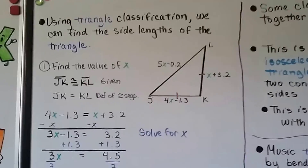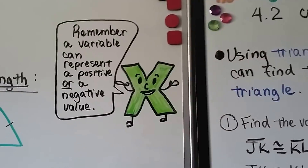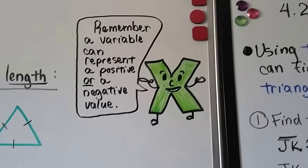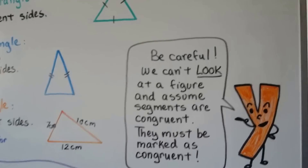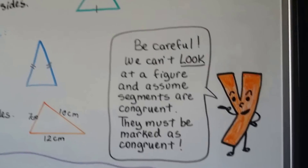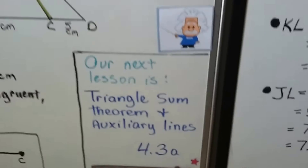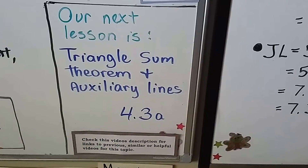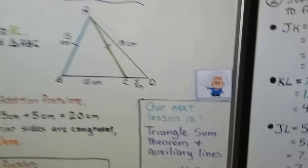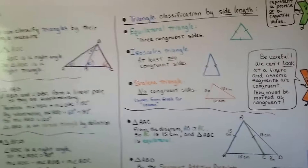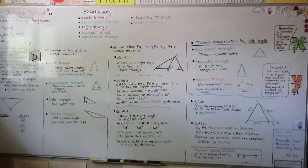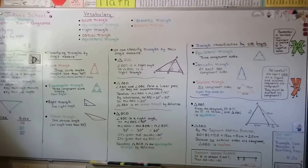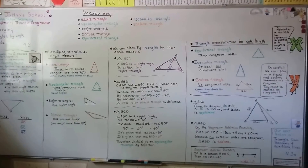When working with variables, remember a variable can represent a positive or a negative value, so be careful. We can't look at a figure and assume segments are congruent — they must be marked as congruent. Our next lesson is the triangle sum theorem and auxiliary lines, 4.3a. I hope you were able to follow along — a lot of this you might have known from middle school, so it's just a good refresher. Have a great day!